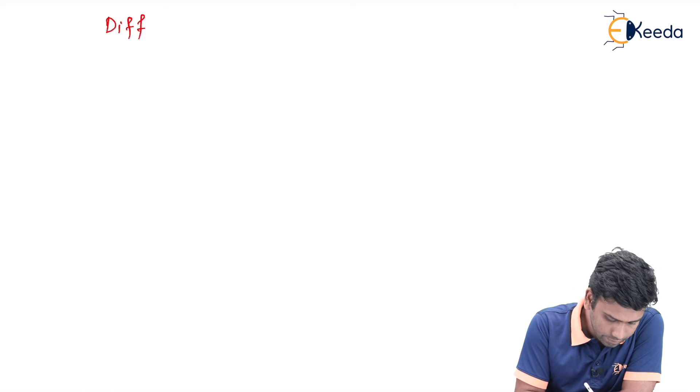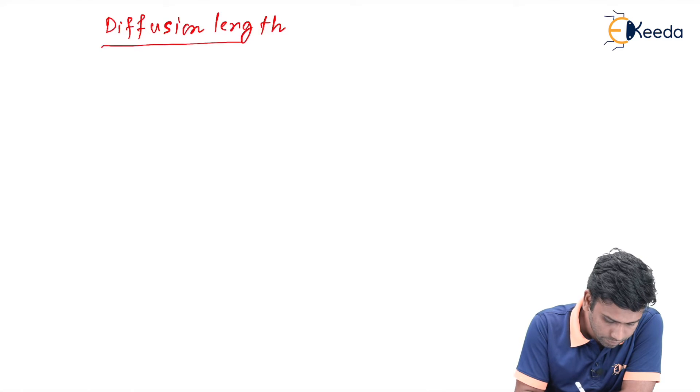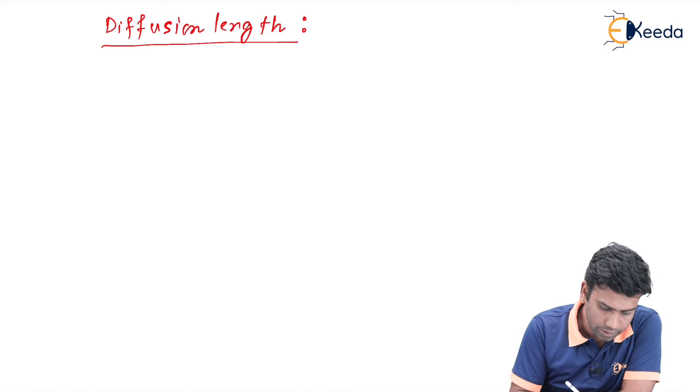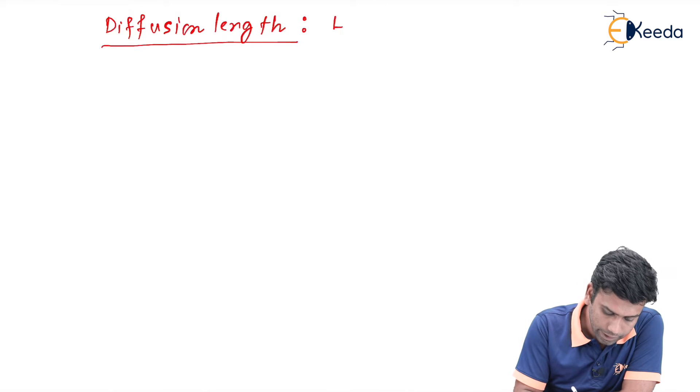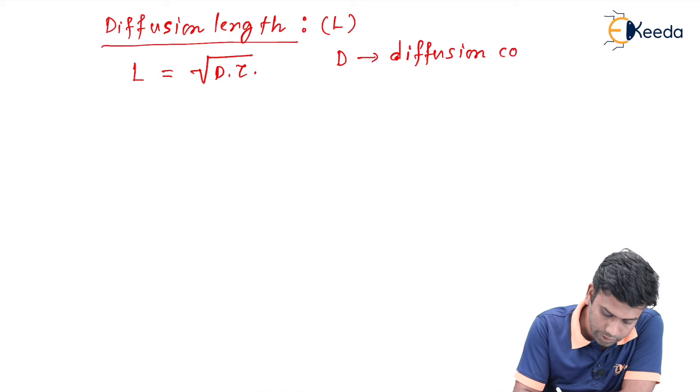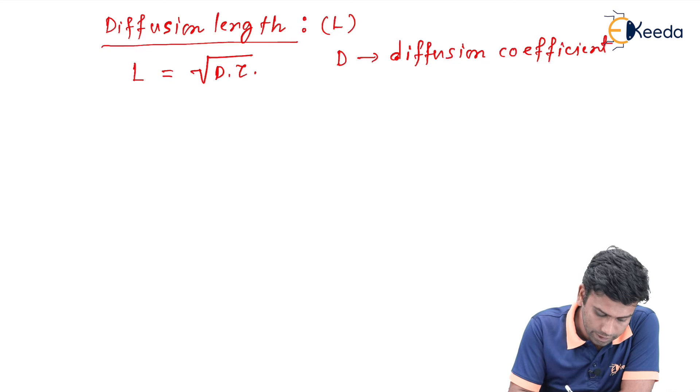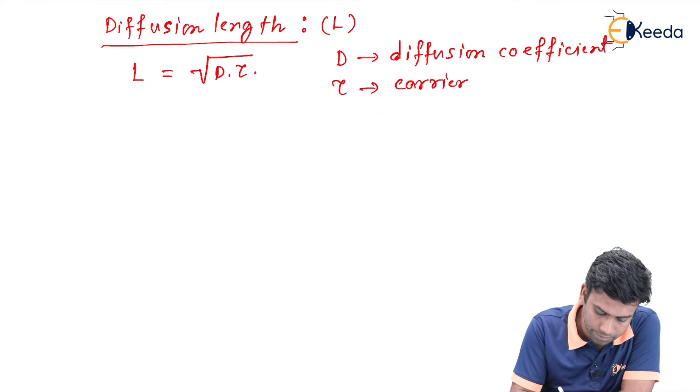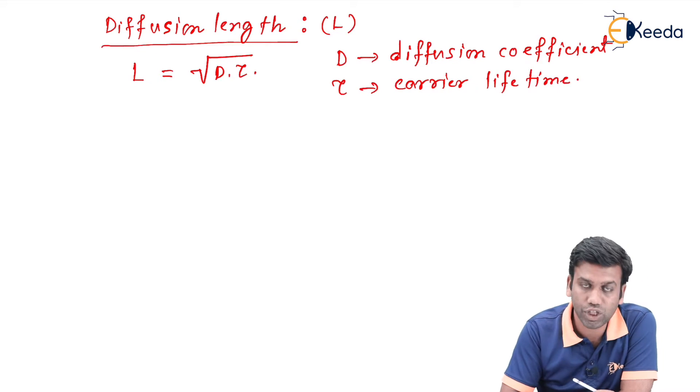Diffusion length is denoted by capital L, and L is written in the equation as √(D·τ), where D is the diffusion coefficient of the charge carriers and τ is the carrier lifetime of the charge carriers.